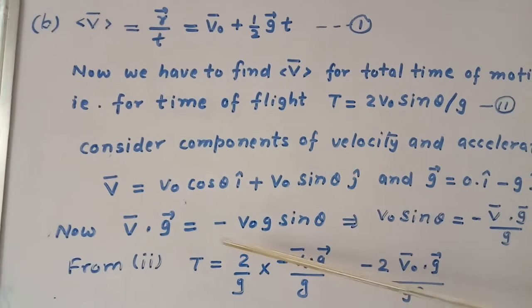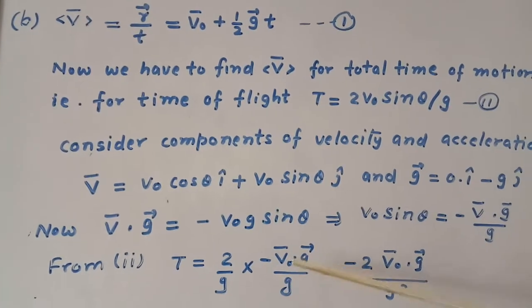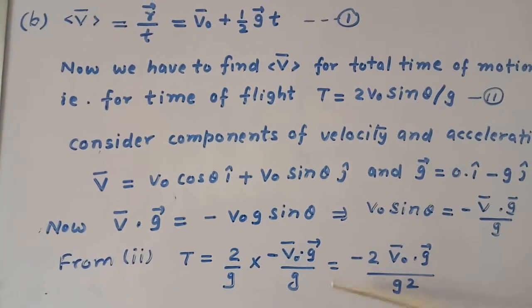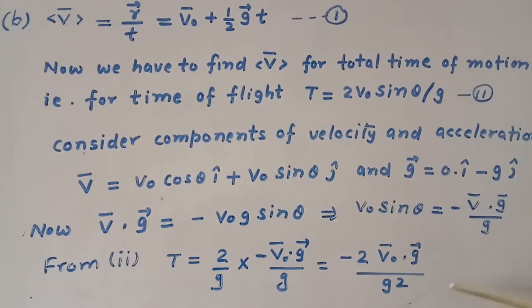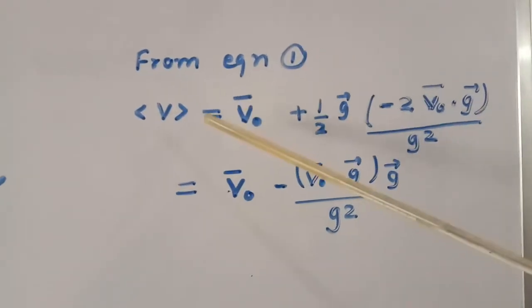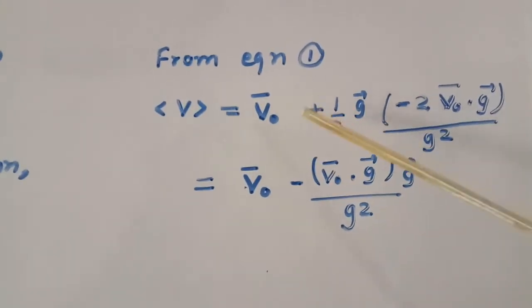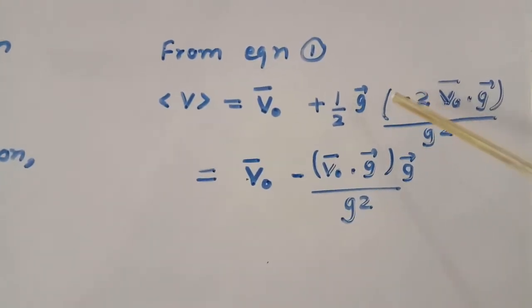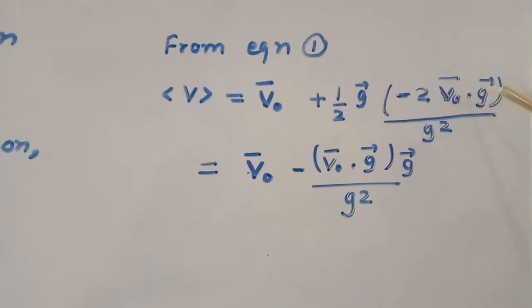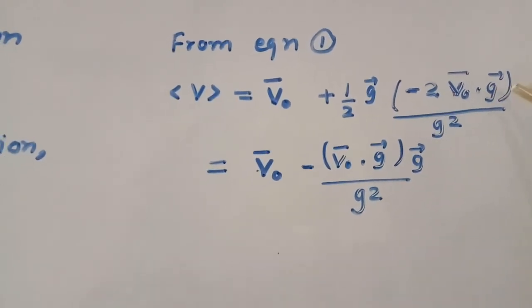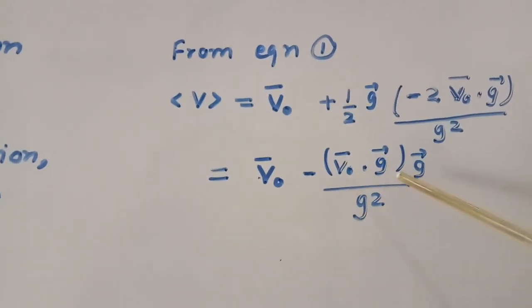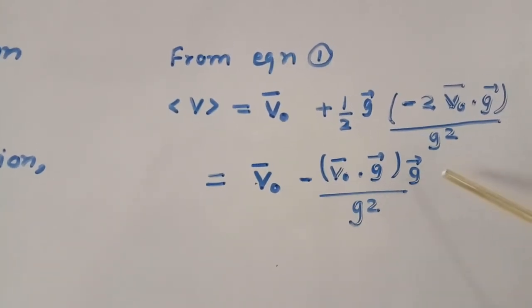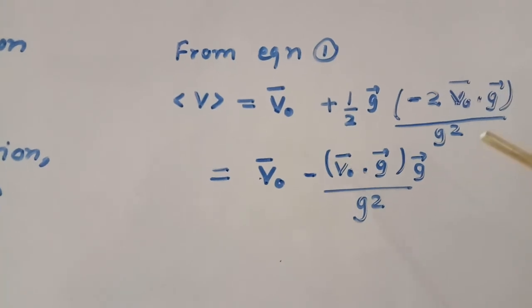From equation 2, T equals 2 times minus V0 dot G divided by G squared. From equation 1, average velocity equals V0 minus V0 dot G divided by G squared, which is our answer. Thank you.